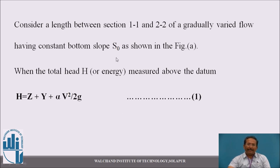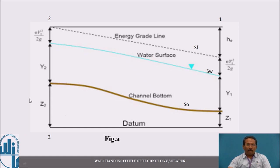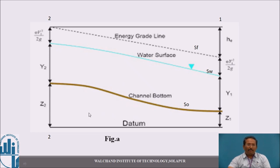Consider the length between section 1 and section 2 of a gradually varied flow having a constant bottom slope S₀, as shown in the figure. The total head at section 1 is: z₁ + y₁ + v₁²/2g. At section 2, it is: z₂ + y₂ + v₂²/2g. The energy correction factor alpha is taken as unity (1). The total head above the datum is: h = z + y + v²/2g, which is the sum of datum head, pressure head, and velocity head.